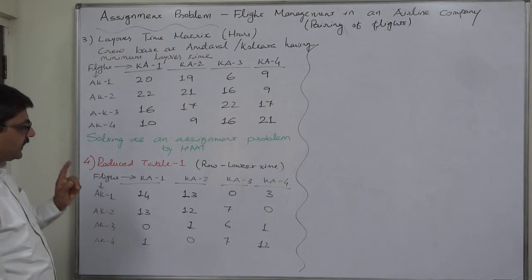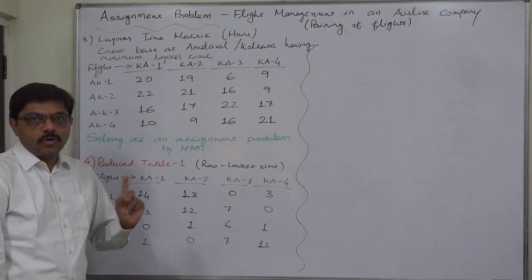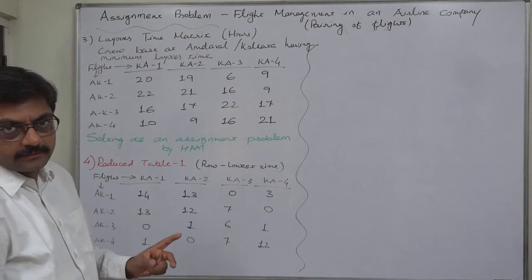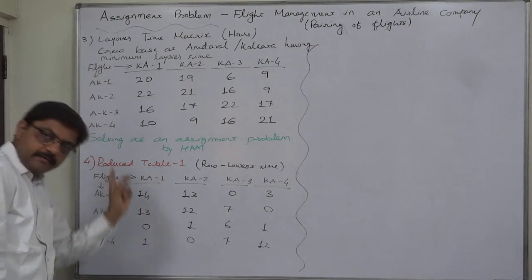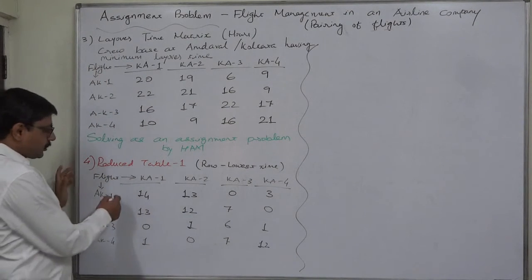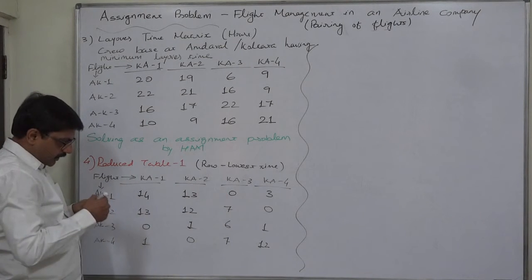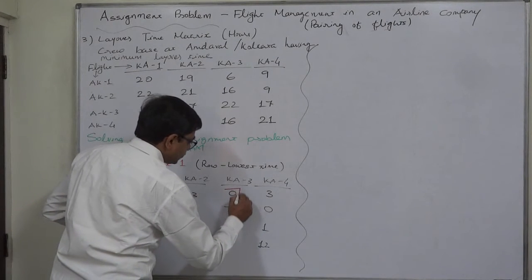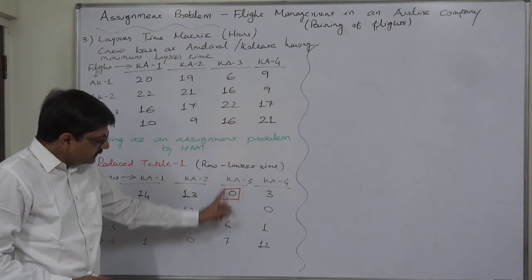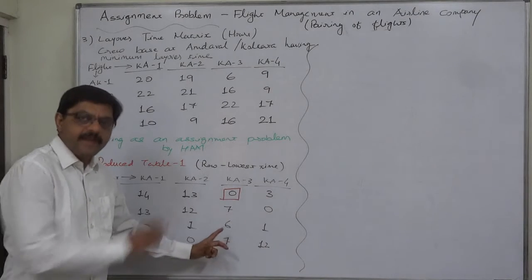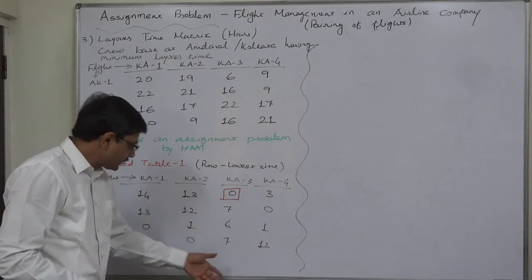First we are going to select the row with originally one 0 only, single 0, and we will start from top and go to bottom. First row single 0, yes, it qualifies. Let us select this 0 for assignment. And check whether there is any other 0 in the same column. If yes, cancel them. There is no other 0.